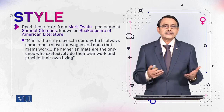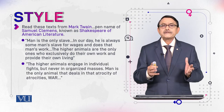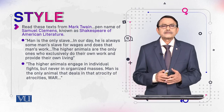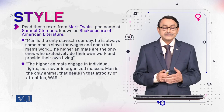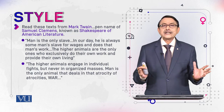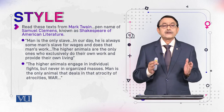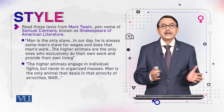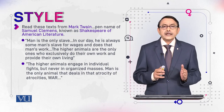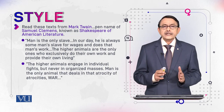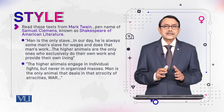There is another paragraph from the same author. The higher animals engage in individual fights — in the jungle, animals fight for food, for mating, for other things — but never in organized masses, never in the form of armies. Man is the only animal that deals in that atrocity of atrocities called war. It means Twain wants to convey that only man does this, and it is something even higher animals don't do.